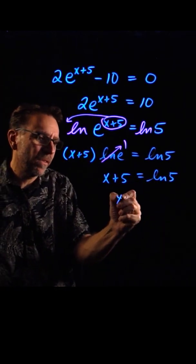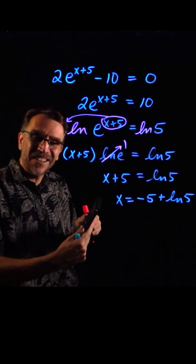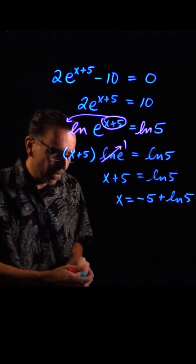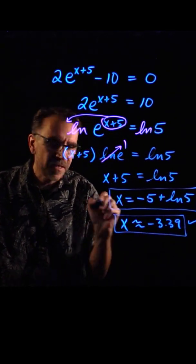Last, we'll subtract 5 on both sides and get x equals negative 5 plus the natural log of 5. And on a calculator, that's about negative 3.39. So this is the exact value, and this is our approximate answer.